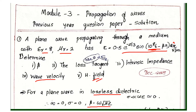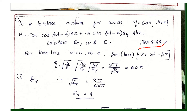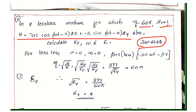This question is from December 2018. The question states: in a lossless medium for which eta is equal to 65 and mu r is equal to 1, calculate epsilon r, omega, and E. For a lossless medium, sigma equals 0 and alpha equals 0. The attenuation constant and conductivity are both zero. Beta value is given in the sin omega t minus beta z term. Eta equals root of mu by epsilon, that is root of mu 0 divided by epsilon 0 into root of mu r divided by epsilon r.